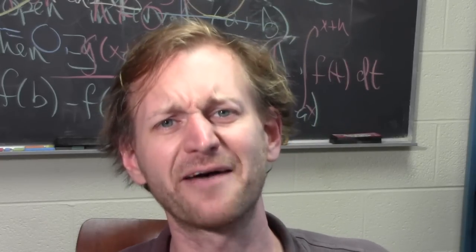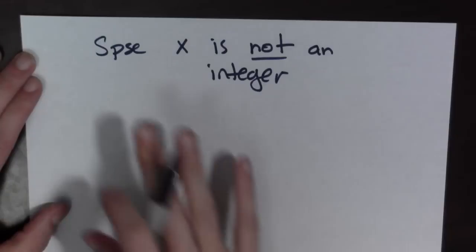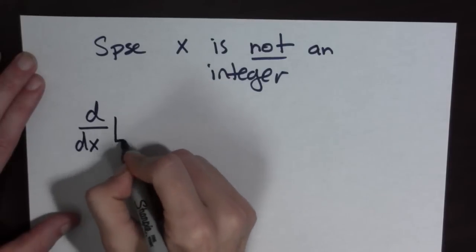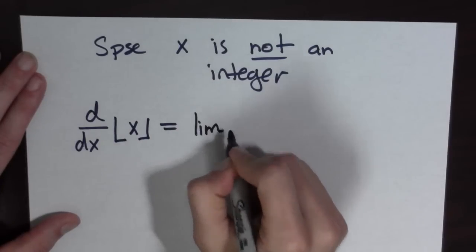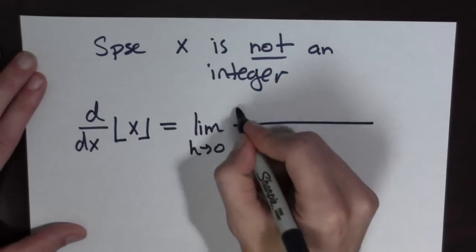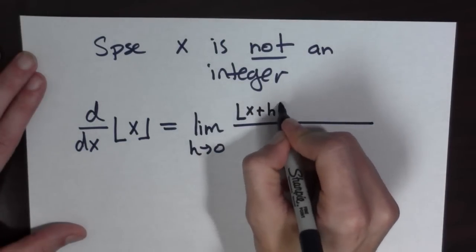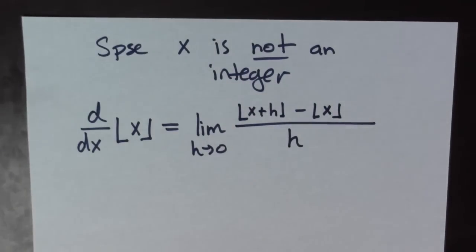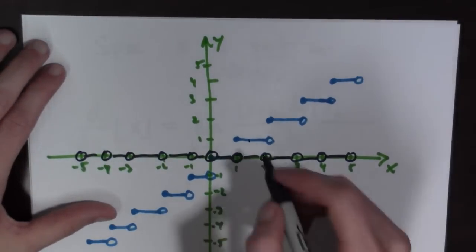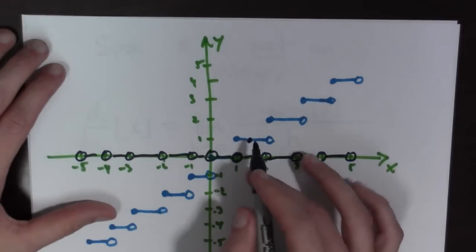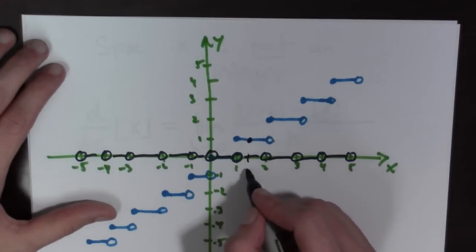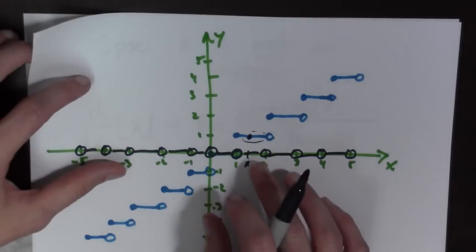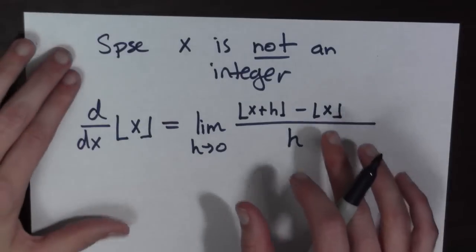I wonder if we can use the limit definition of the derivative to help us out. Suppose x is not an integer. If we take the derivative of the greatest integer function, this is going to equal the limit as h goes to 0 of the greatest integer less than or equal to x plus h, minus the greatest integer less than or equal to x, all over h. If we look at the plot again, imagine if x is right here — h is going to x, and at some point it's going to be close enough to x that when you take the floor of x plus h, it's going to equal the floor of x.